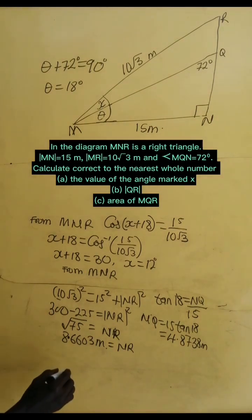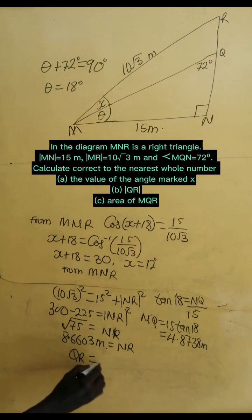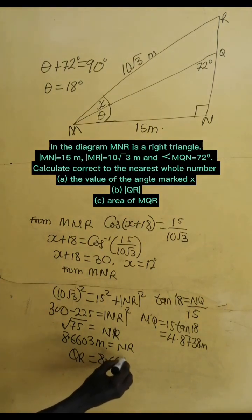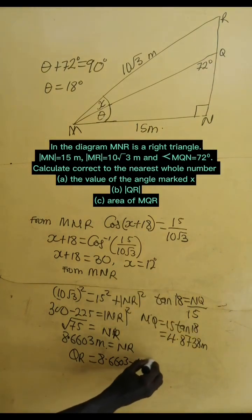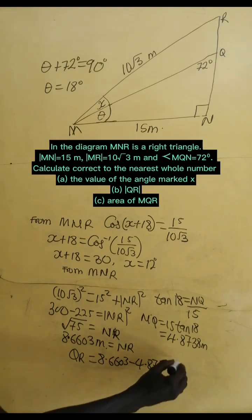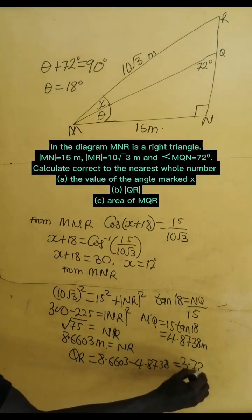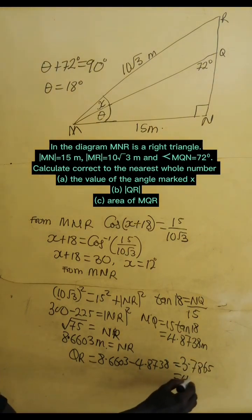Wow, I didn't bring the meter here. So, let's do that one. Okay, that's great. And let's move on. Now, if I need QR, I just take NR and then subtract NQ from it. That's very simple. And this gives 3.7865, which is equal to 4 meters to the nearest whole number.